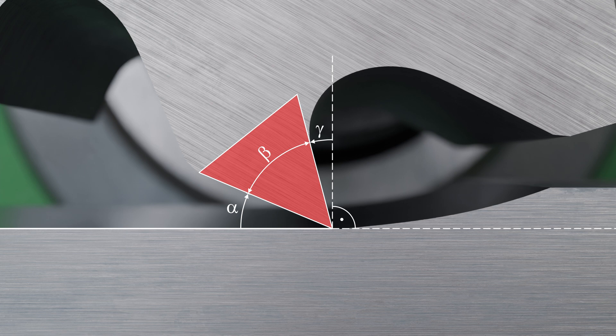In principle, the following applies to the specified angles: the sum of the clearance angle, wedge angle, and rake angle is always 90 degrees.